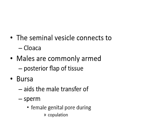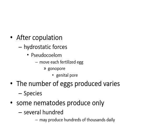After copulation, hydrostatic forces in the pseudocoelom move each fertilized egg to the gonopore and genital pores. The number of eggs produced varies among different species — some nematodes produce only 700 eggs, whereas others produce hundreds of thousands of eggs daily.